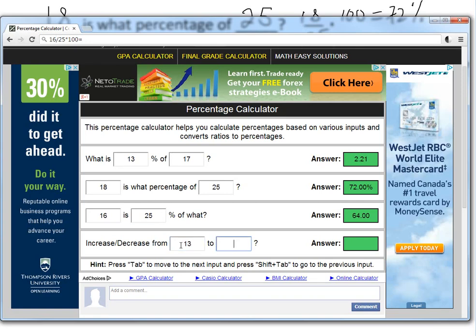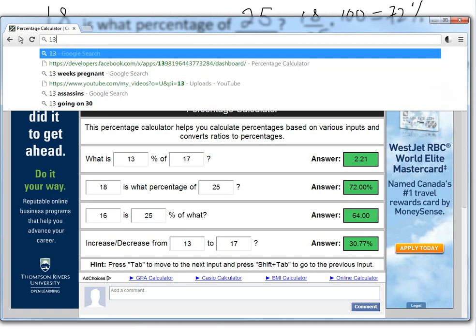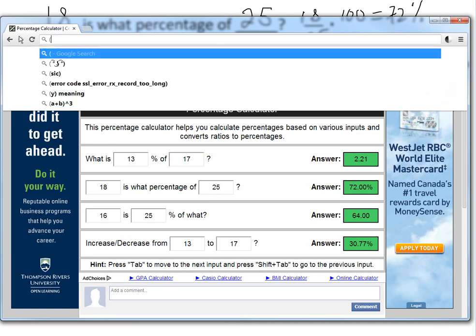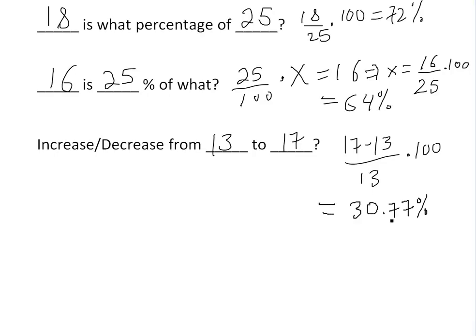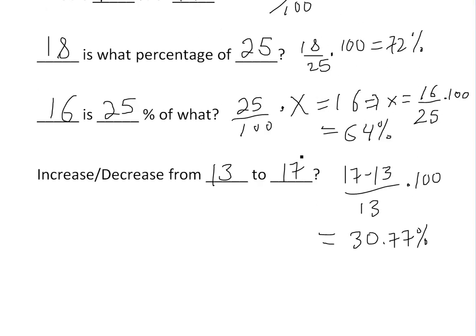Let's go from 13 to 17, so 30.77. Or in this calculator, bracket 17 minus 13 divided by 13, times it by 100. Yeah, 30.77, so exactly this one right over there. Then here I've written 30.77.